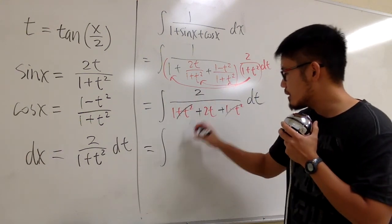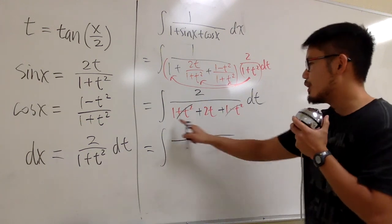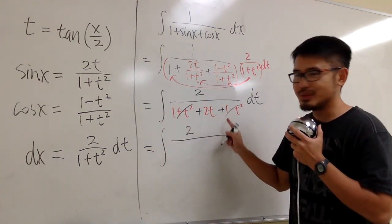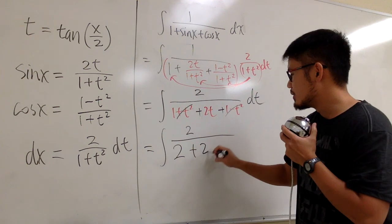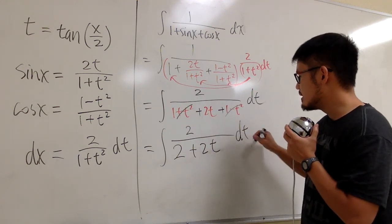We have the integral. On the top, we have 2 over 1 plus 1, which is 2. And then plus 2t, and this is dt, right?